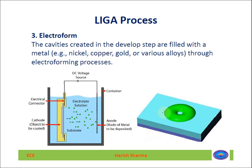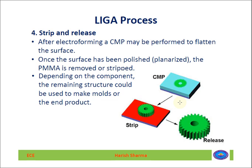After electroforming, the deposited metal extends above the surface level. A CMP (Chemical Mechanical Polishing) process is used to flatten the surface. Once the surface is polished, the PMMA is removed using acetone or similar material. The remaining metal structure can be used directly as a mold for making replicas, or it can be released from the platform as a single unit such as a gear.